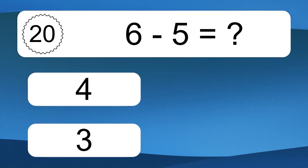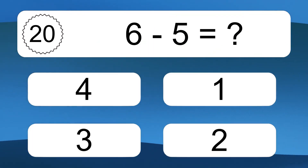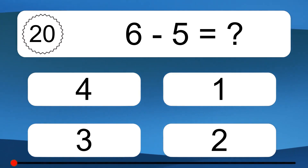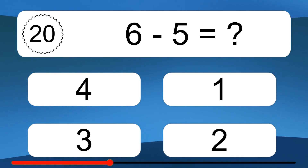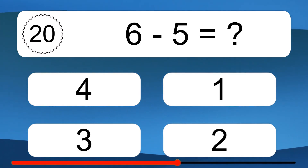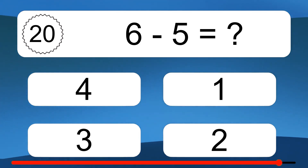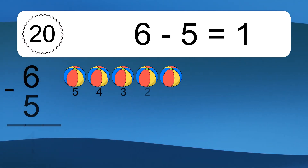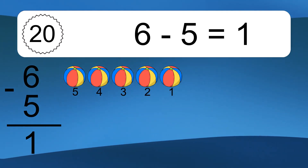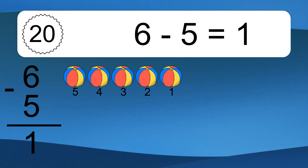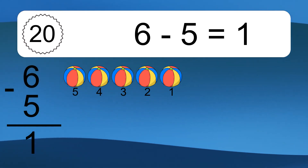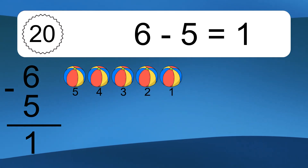6 minus 5 equals what? 6 minus 5 equals 1. Let's count it: 5, 4, 3, 2, 1.